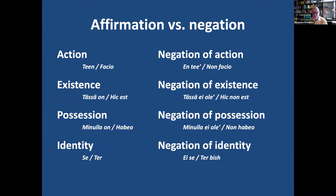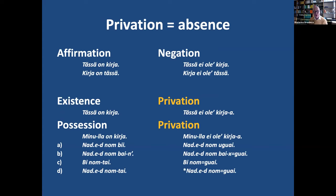Many languages use the same word or verb — like a copula existential — to express existence and also negation. But some languages have a special negator of identity. I took Mongolian as an example: if you deny the identity of a nominal object, you use a different negator, like 'not that one'. But I'm not going to discuss that further.